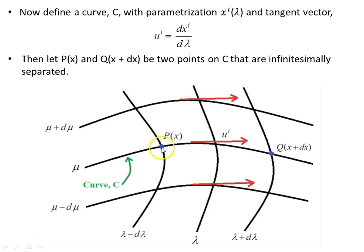On this curve we're going to have two points: point p and point q. Point p at the value of x and point q at the value of x plus dx. So they're infinitesimally separated from each other, but on the same congruence curve.